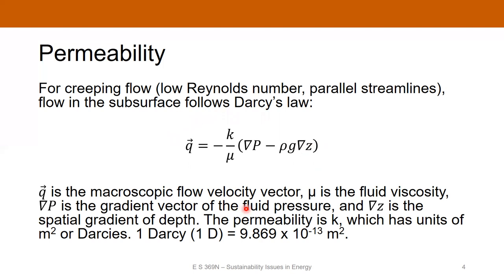We usually express permeability in meters squared if you're working in SI units, or Darcys if you're working in what we call the Darcy system where pressure is in atmospheres. The conversion between them is that one Darcy is approximately 10 to the minus 12 meters squared. So if you want to be really clever, you can start talking about the area of something in Darcys — like, oh yeah, my house is like 2 billion Darcys — and people will be like, what? And then you'll have to convert it to square feet.